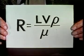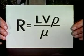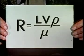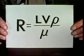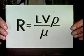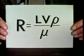Here L is a length characteristic of the field of flow, V is a characteristic velocity, and rho and mu are the density and viscosity of the fluid. The numerical value of R provides a rough estimate of the relative importance of inertia and viscosity in any fluid flow. When R is small, the importance of inertia is small compared with that of viscosity.